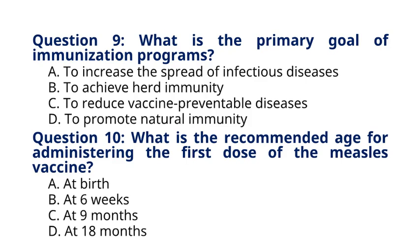Question 10. What is the recommended age for administering the first dose of the measles vaccine? A. At birth. B. At 6 weeks. C. At 9 months. D. At 18 months. The correct answer to question 10 is option C, at 9 months. The first dose of the measles vaccine is typically administered at 9 months of age as part of routine childhood immunization schedules.